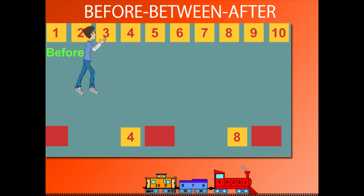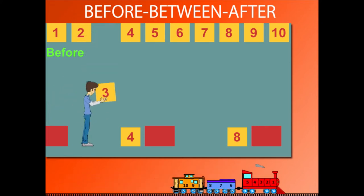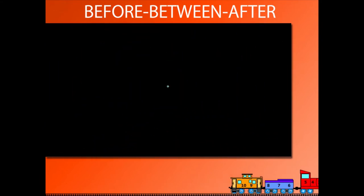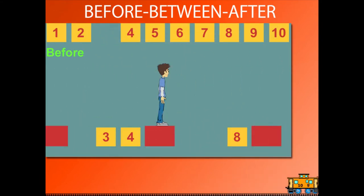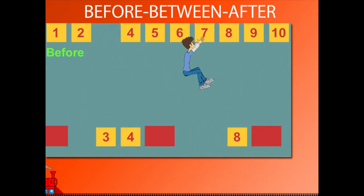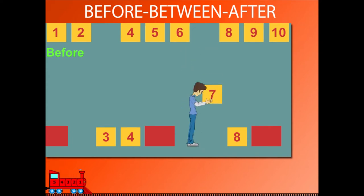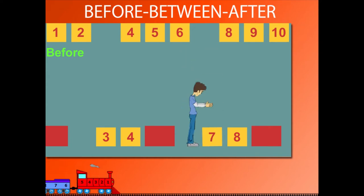What comes before 4? Sammy pulls down 3. Now what comes before 8? Sammy jumps and pulls down 7.